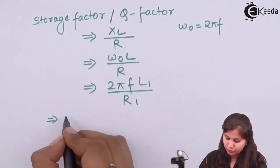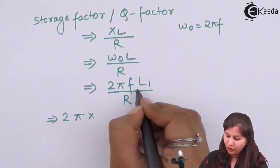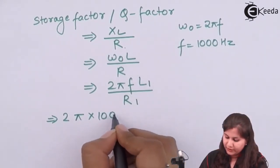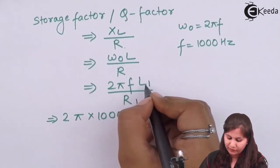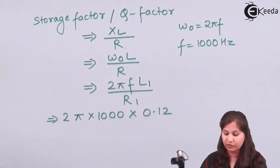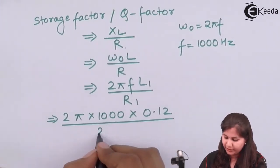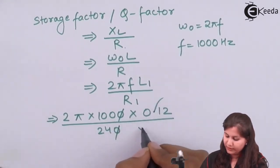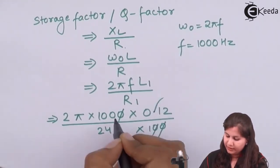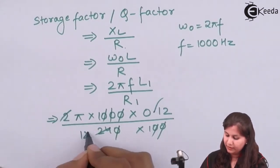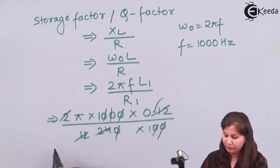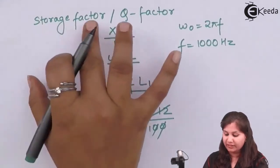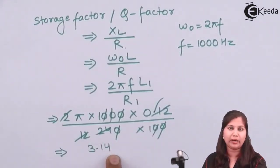Putting in the values: F = 1000 Hz, L1 = 0.12 H, R1 = 240 Ω. So Q = 2π × 1000 × 0.12 / 240. Simplifying: 1000/240 reduces, leaving Q = π = 3.14. So the storage factor is 3.14.